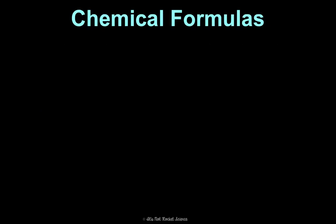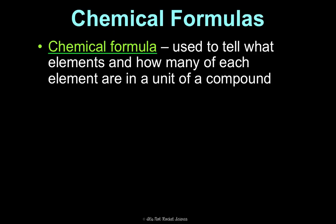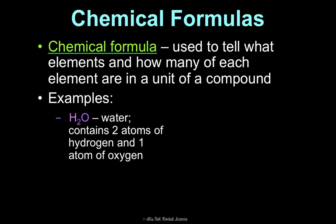I just showed you NaCl — that's an example of a chemical formula. A chemical formula is basically what is used to tell what elements and how many of each element make up a compound. For example, H2O is water. That means water is a compound that contains two atoms of the element hydrogen and one atom of the element oxygen.